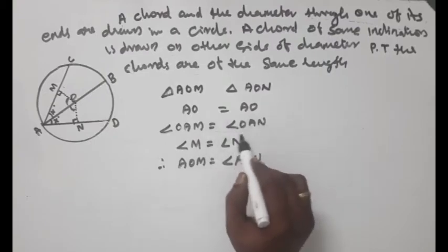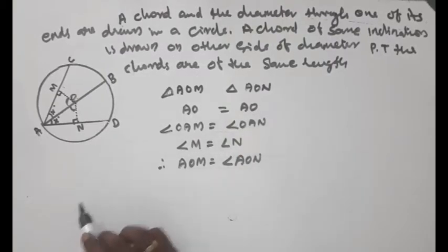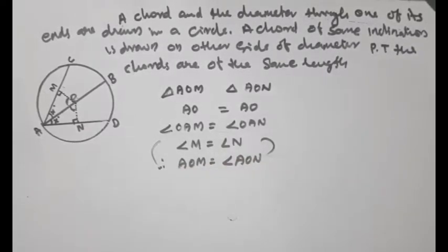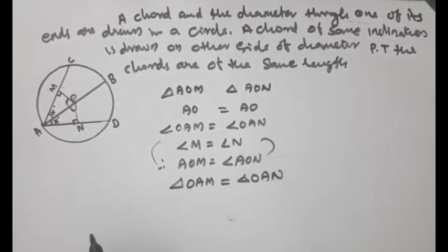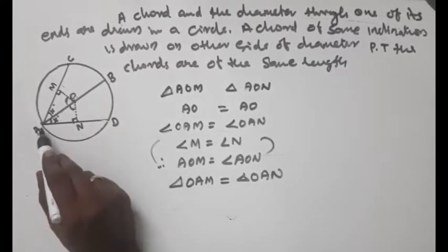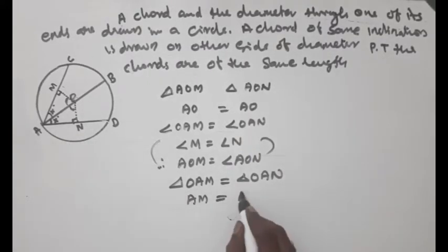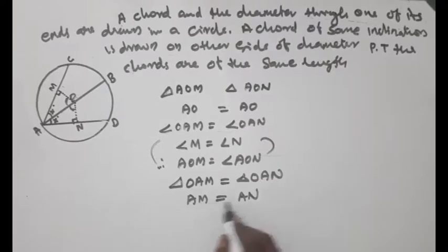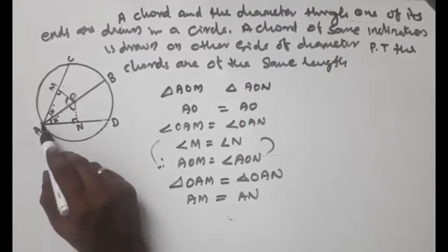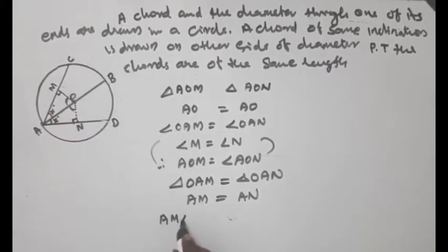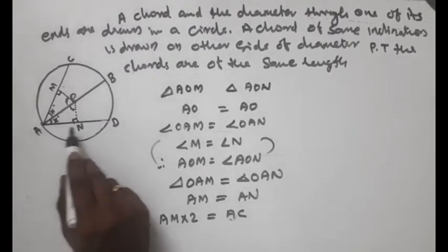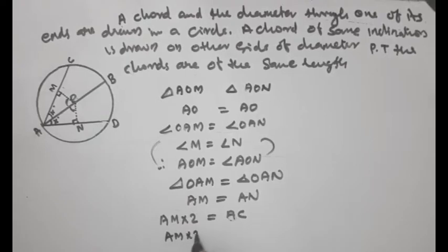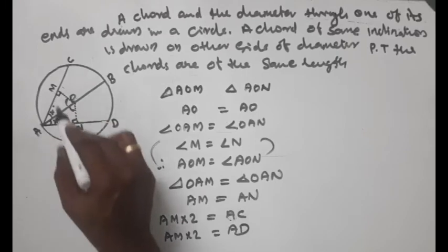Triangle AOM and triangle OAN are congruent — their angles are equal. Since AM is equal to AN, and AM is half of AC while AN is half of AD, we get AM equals AN and therefore AC equals AD. So the two chords are of equal length.